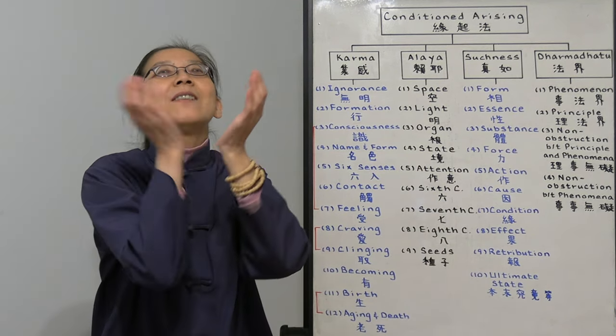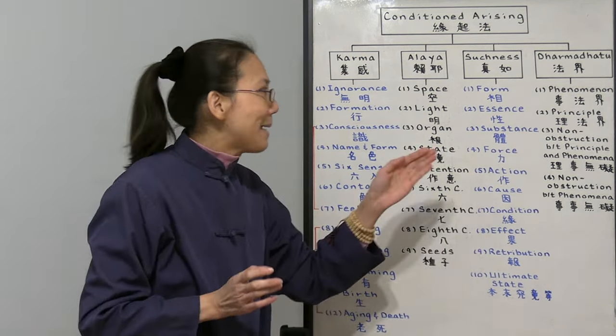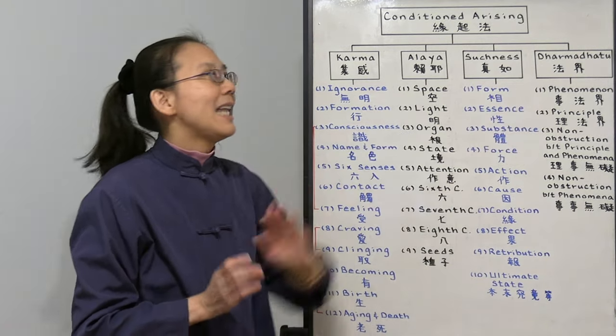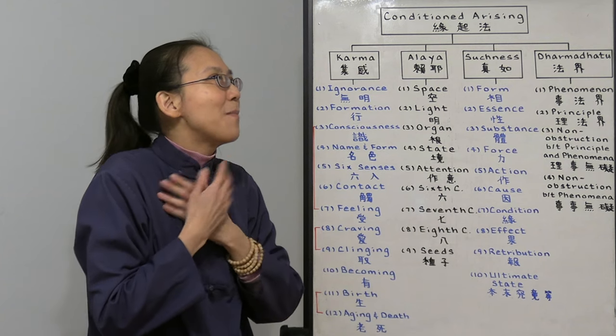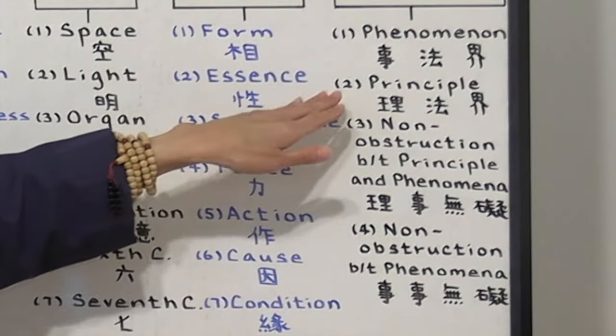For example, I have a piece of cake. This cake is the realm of phenomenon. I put a lot of love in this cake. Then the love of my heart is the realm of principle.